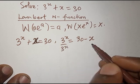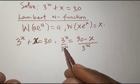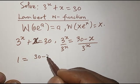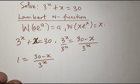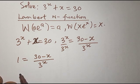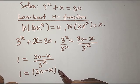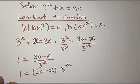From there we divide through by x, so those cancel and we have 1 = (30 − x) / 3^x. This equation can then be rewritten as 1 = (30 − x) · 3^(−x), applying the law of indices.